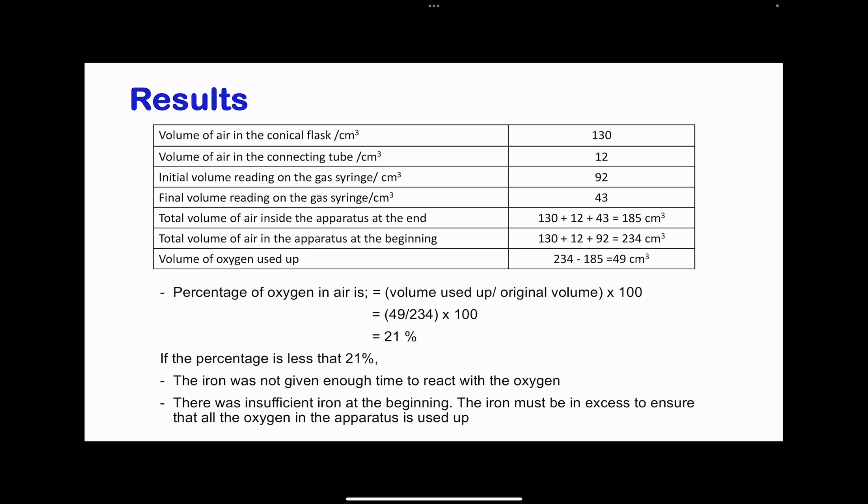Let's take an example. If we had the volume of air in the conical flask as 130 centimeters cubed, this is from your textbook, and then the volume of air in the connecting tube to be 12, then the volume of air within the syringe to be 92. It means the total volume within the apparatus at the beginning of the experiment is going to be 130 plus 12 plus 92, giving us 234 centimeters cubed. If this is the volume within the syringe at the end, it means the total volume at the end is 130 plus 12 plus 43, giving us 185. So the change is going to be the volume of oxygen used up, which is going to be 234 minus 185, giving us 49 centimeters cubed.